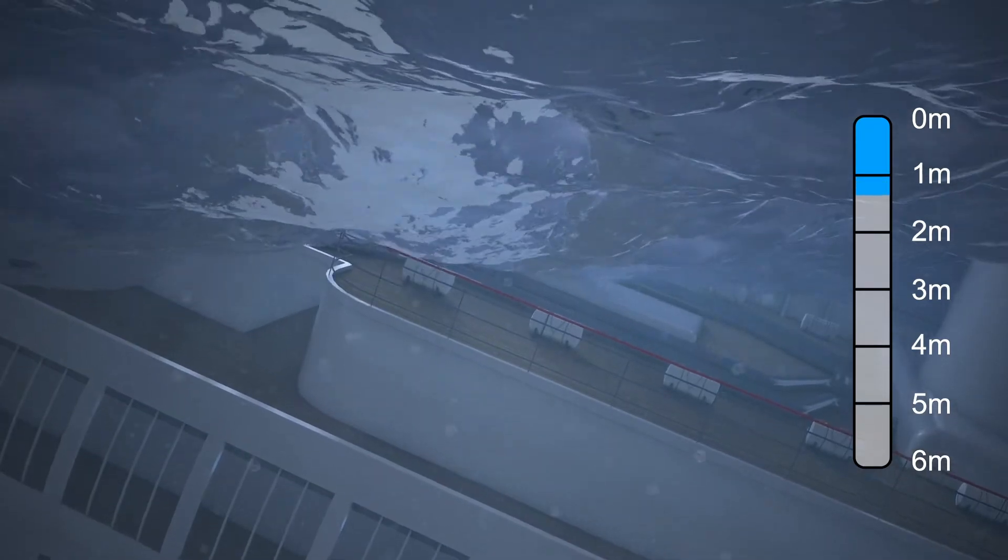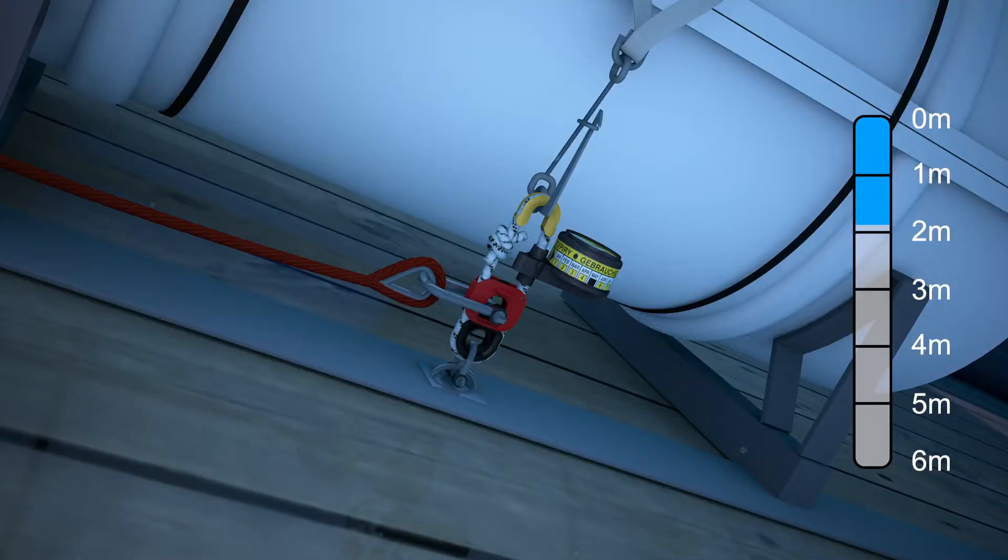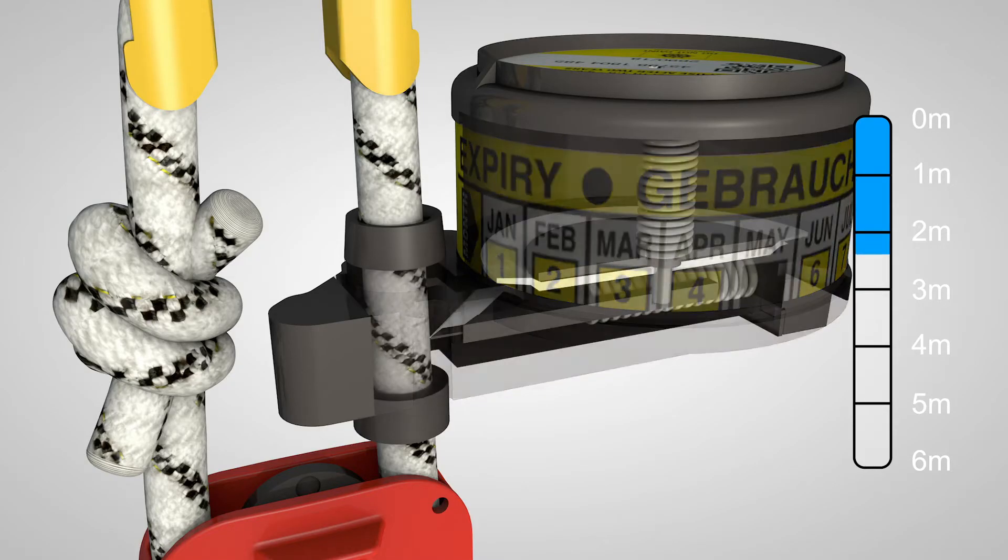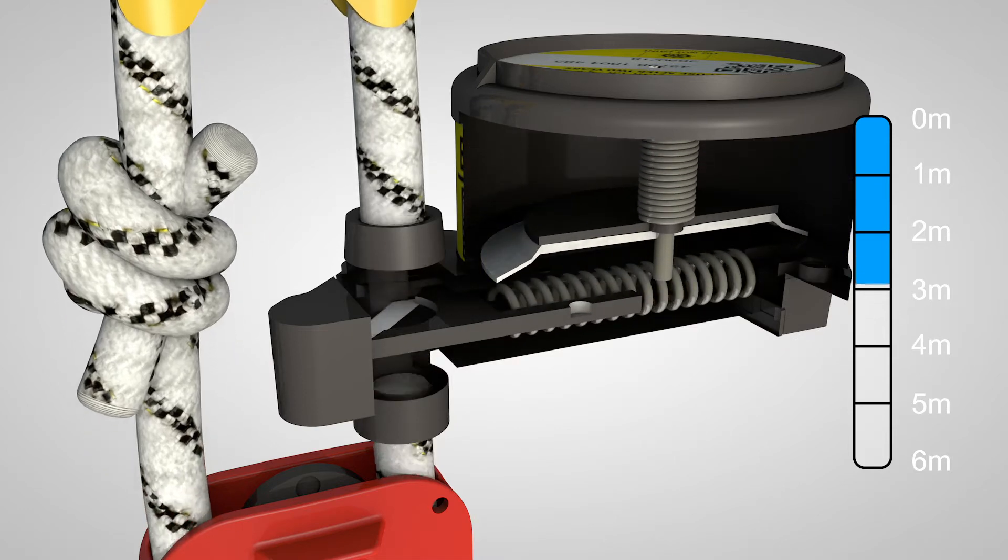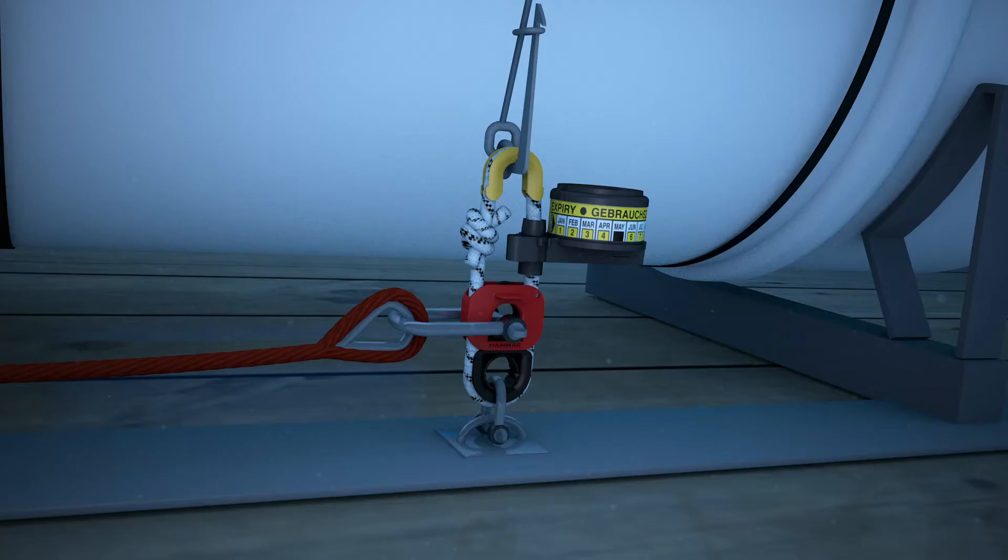At 1.5 to 4 meters below the surface, water pressure acts on a membrane in the H-20, releasing a spring-loaded blade that instantly cuts through the strong rope.